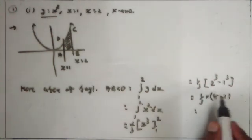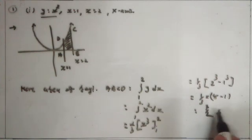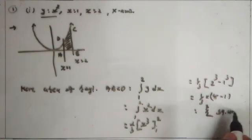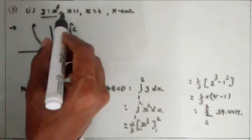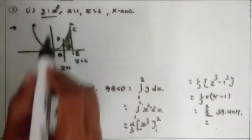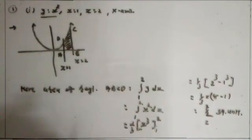So it is equal to 1 by 3 into (2 raised to 3, that is 8, minus 1 raised to 3, that is 1). So it is equal to 8 minus 1, that is 7 upon 3 square units. This becomes the area between the given curve, line x is equal to 1, x is equal to 2, and the x-axis.